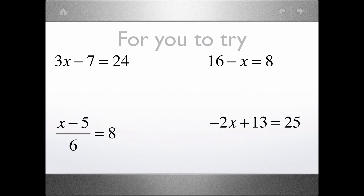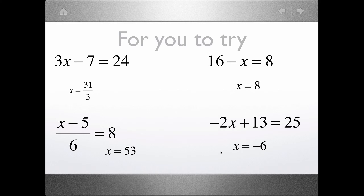Here are four problems for you to try. Copy them into your journal, stop the video, solve them, and then restart the video to check your answers. Here are the solutions: 3x minus 7 equals 24 — x equals 31 thirds. 16 minus x equals 8 — x equals 8. x minus 5 over 6 equals 8 — x equals 53. Negative 2x plus 13 equals 25 — x equals negative 6. If you got any wrong or want to see how they're solved, keep watching. If you got them all right, you're done.